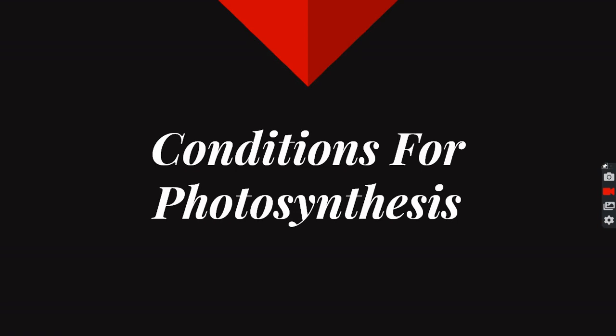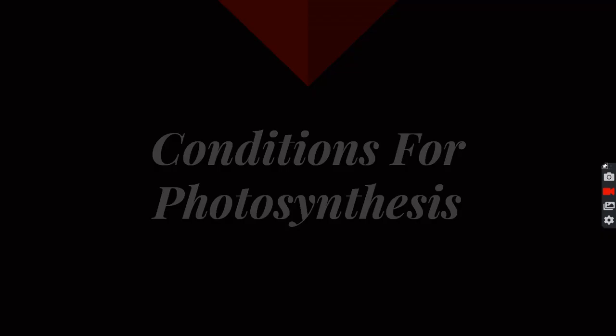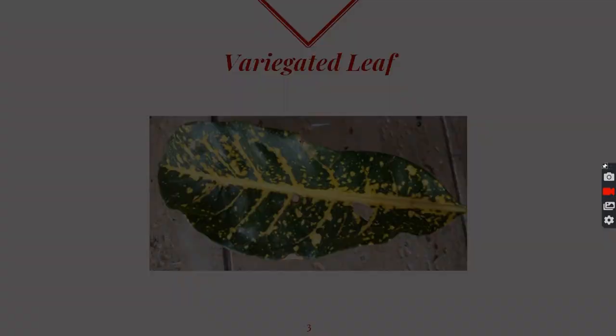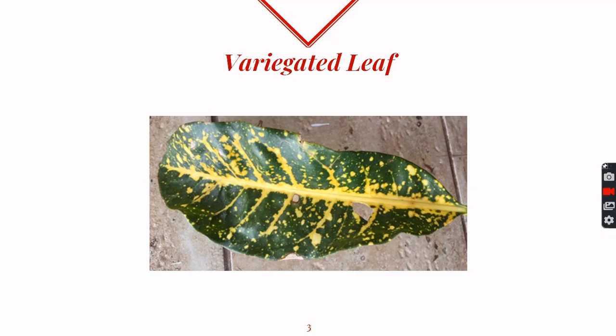Sunlight and chlorophyll are two essential conditions for the process of photosynthesis. In this video we will try to prove this with the help of a few activities. First we will see that chlorophyll is necessary for the process of photosynthesis, and for this activity we will take a potted plant which has variegated leaves.